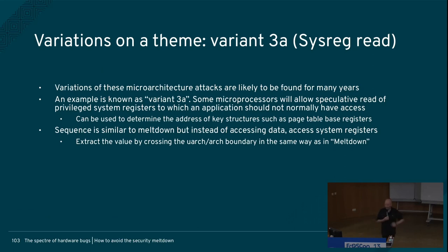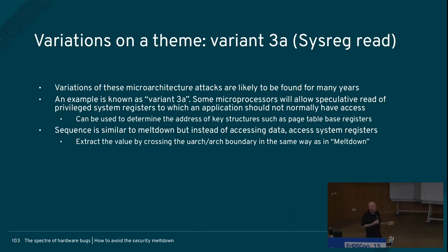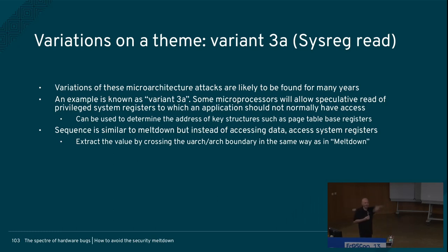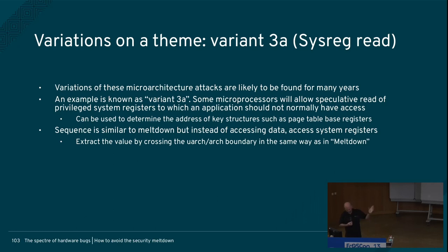Variant 3a basically says that in addition to Meltdown, I might be able to read some system registers I'm not supposed to access — for example, I might be able to read where my page tables are and use that to de-randomize the layout of memory. There are little tricks you can do. It's not that interesting, but there is a variant called 3a.